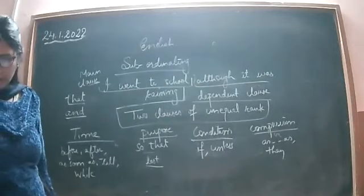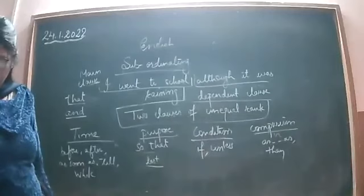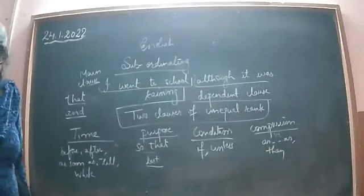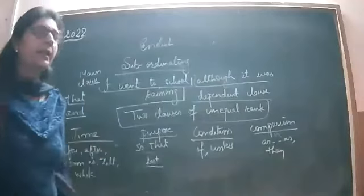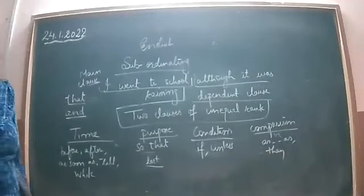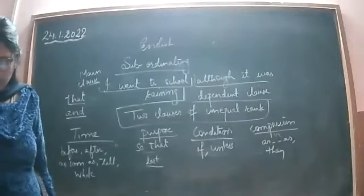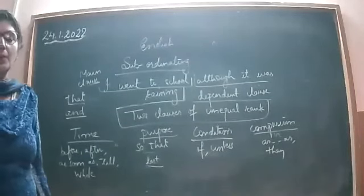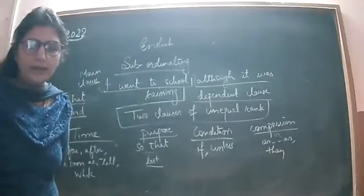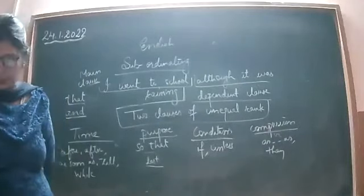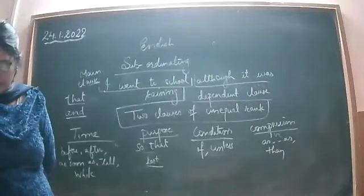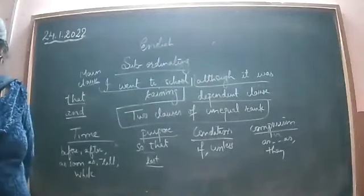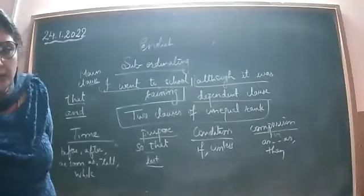Eighth: 'Umang will take Ravi to the station as Ravi wants him to.' Ninth: 'The program was well organized as/because it started and ended on time.' — Both 'as' and 'because' are correct. Tenth: 'You are only 17 so you can't vote,' or 'You can't vote because you are only 17.'